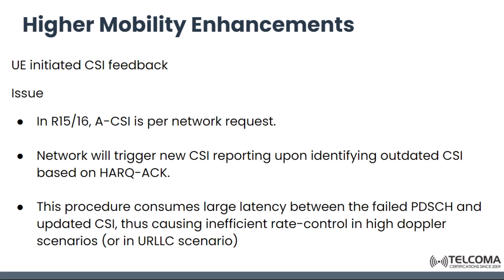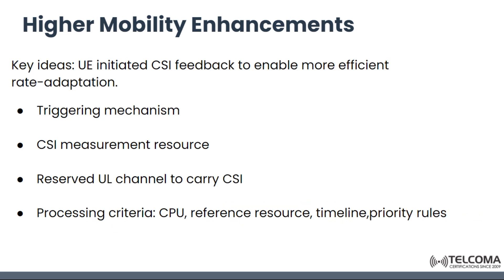Regarding UE-initiated CSI feedback: in Release 15 and Release 16, CSI is triggered per network request. The network triggers new CSI reporting upon identifying outdated CSI based on HARQ acknowledgement, but this procedure consumes large latency between the failed PDSCH and updated CSI, causing inefficient rate control in high Doppler scenarios such as URLLC. Key ideas include UE-initiated CSI feedback for more efficient rate adaptation, with triggering mechanisms, CSI measurement resources, an uplink reserved channel to carry CSI, and various processing criteria including CPU reference resource timeline and priority rules.